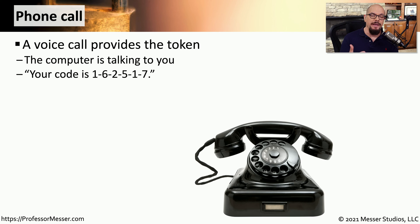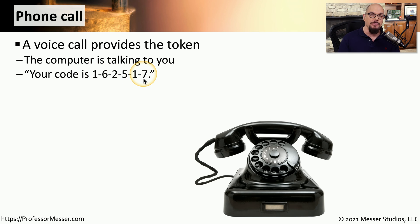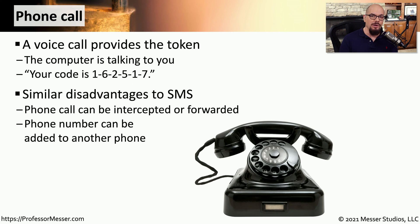Since many of these authentication methods are based on something you have — your mobile phone — we could also use a phone call to perform the same type of function. Instead of an app providing a pseudo random number, an automated process calls you and tells you the number. You'd pick up the phone and the automated message would say your code, and you would type that in along with your username and password to complete authentication. The disadvantages of receiving phone calls for authentication are very similar to those of SMS. Someone can modify phone configurations or configure forwarding so they receive the call instead of you, or phone numbers can be added to multiple devices so that the call rings simultaneously and someone can intercept it before you answer.